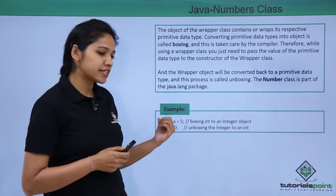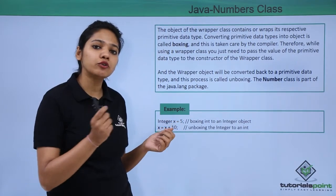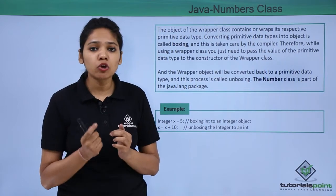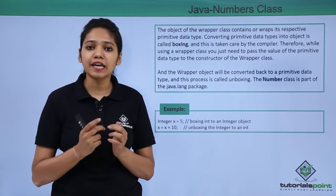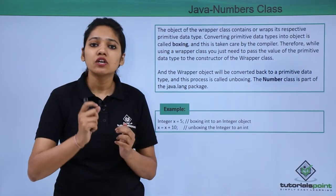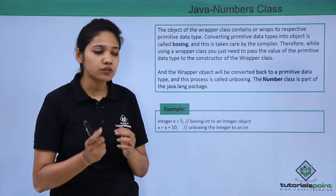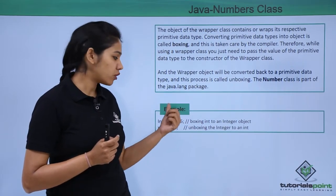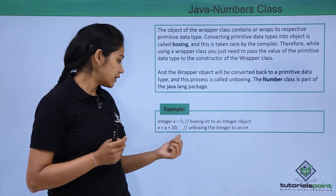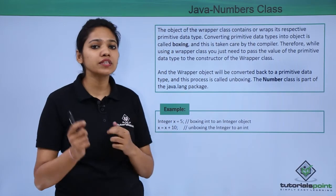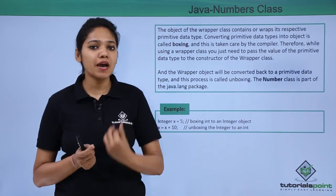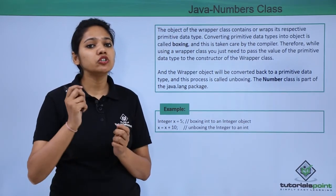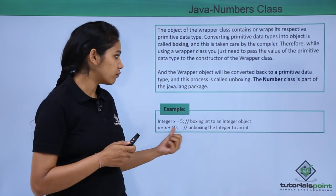Here is an example where you store the value of int x equals to 5, but this value you may not know - you may store it at run time, so you are just storing the reference. The conversion or the autoboxing is here: you write it into Integer type. And then when you are storing the value back or performing certain operations, that is nothing but unboxing the value.